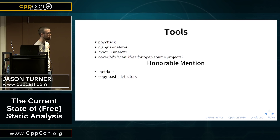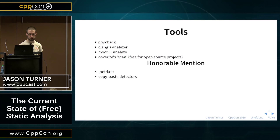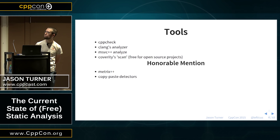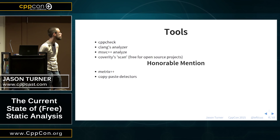We'll also cover Clang's analysis tools, Visual Studio's analyzer which is built into the Visual Studio compiler, and Coverity Scan, which doesn't quite fall into the category of the other three but is free if you have an open source project. And we'll make some mention of Metrics++, which generates metrics about your code and copy-and-paste detectors.